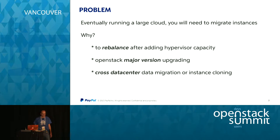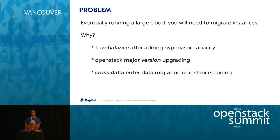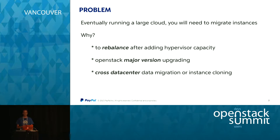The problem is, if you're running a large cloud, eventually you've got to move some virtual machines. Why? Maybe you've added hardware or done a large OpenStack upgrade and you can't do a minor version change, so you have to move the whole machine to a new hypervisor. Or maybe you've got a new data center and you've got to move all of your machines there. It seems like a simple problem, but it turns out it's not.